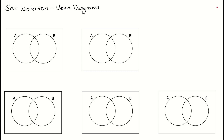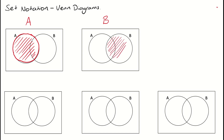So with Venn diagrams, remember if I'm interested in looking at the space that represents the event A, then I'm looking at my circle A, so I can shade in that whole space. Likewise, if I'm interested in the space that represents my event B occurring, then I'm shading in the entire space within my B circle.